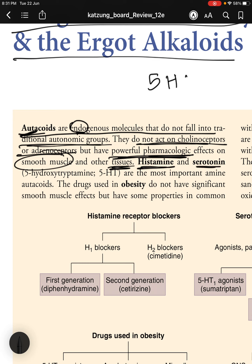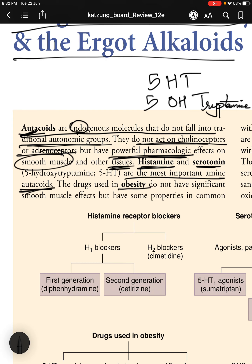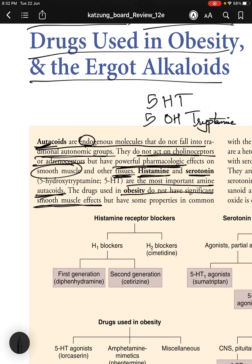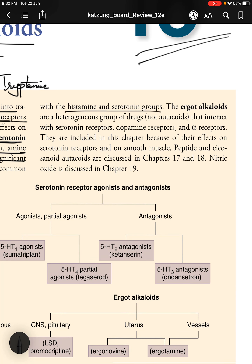Histamine and serotonin, also called 5-HT (5-hydroxytryptamine), are the most important amine autocoids. The drugs used in obesity do not have significant smooth muscle effects but share some properties with the histamine and serotonin groups. The ergoalkaloids are a heterogeneous group of drugs — not autocoids — that interact with serotonin receptors, dopamine receptors, and alpha receptors, included here because of their effects on smooth muscle.